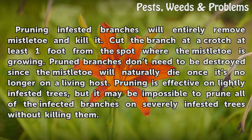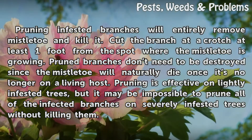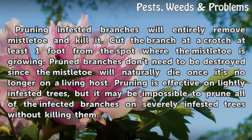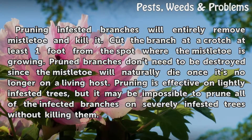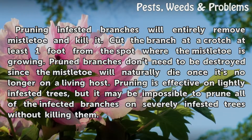Pruning infested branches will entirely remove mistletoe and kill it. Cut the branch at a crotch at least one foot from the spot where the mistletoe is growing. Pruned branches don't need to be destroyed since the mistletoe will naturally die once it's no longer on a living host. Pruning is effective on lightly infested trees, but it may be impossible to prune all of the infected branches on severely infested trees without killing them.